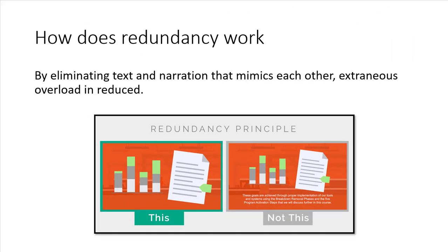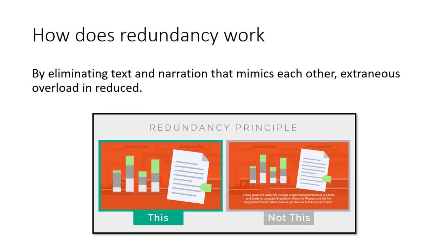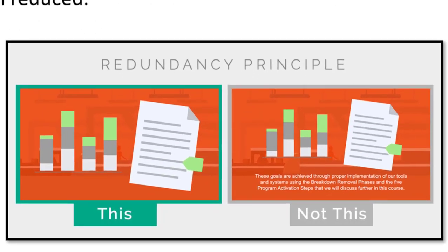By eliminating text and narration that mimic each other, you reduce the extraneous overload to the students. As you can see from this example, the text has been taken away so it's not overloaded. Students don't have to look at the wording and then look at the picture or graph — they only have to focus on one thing.